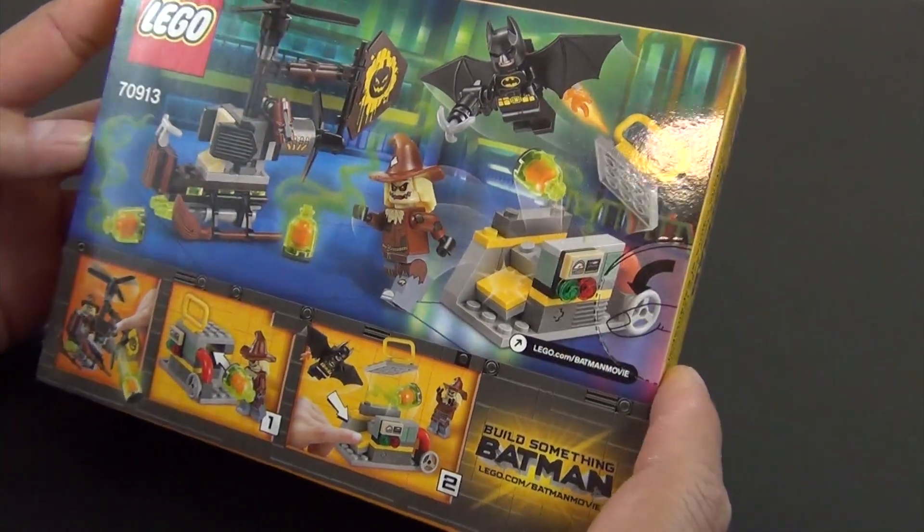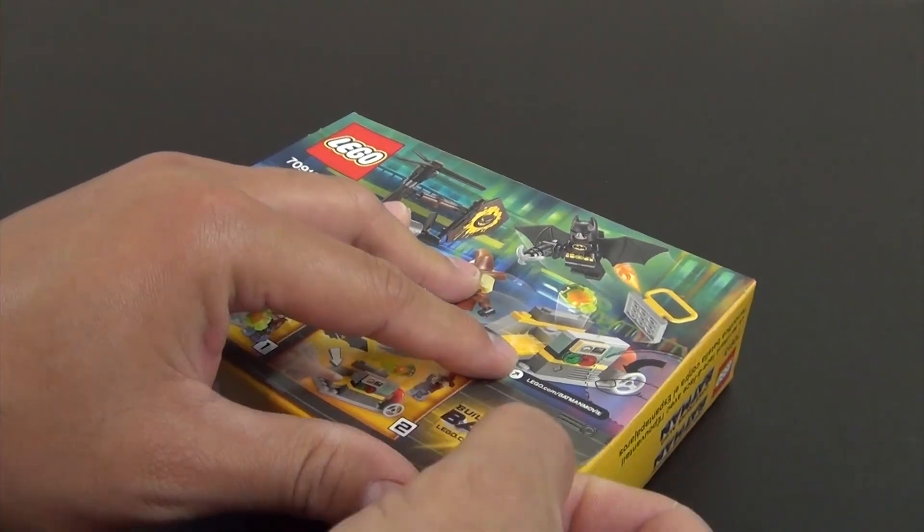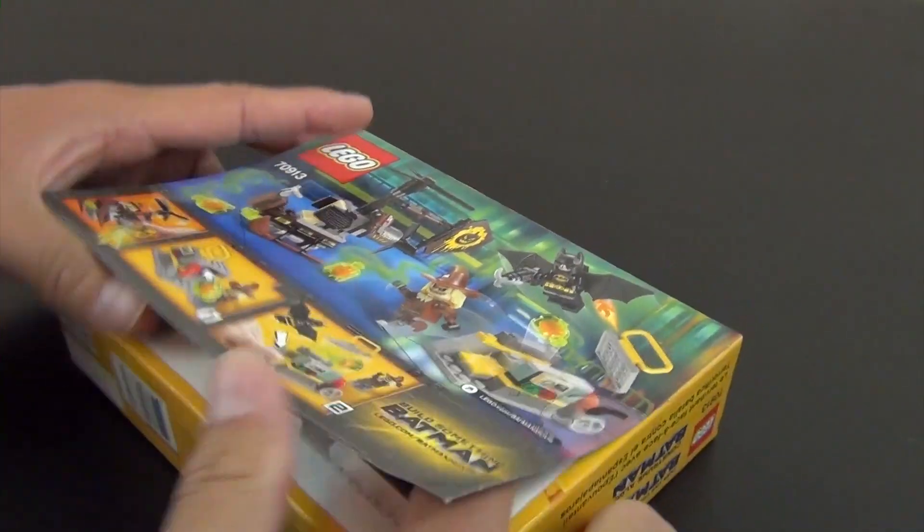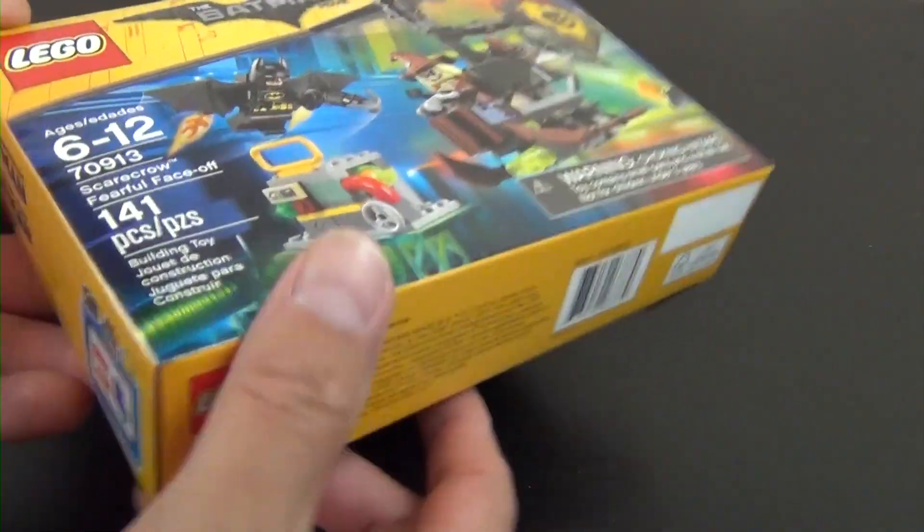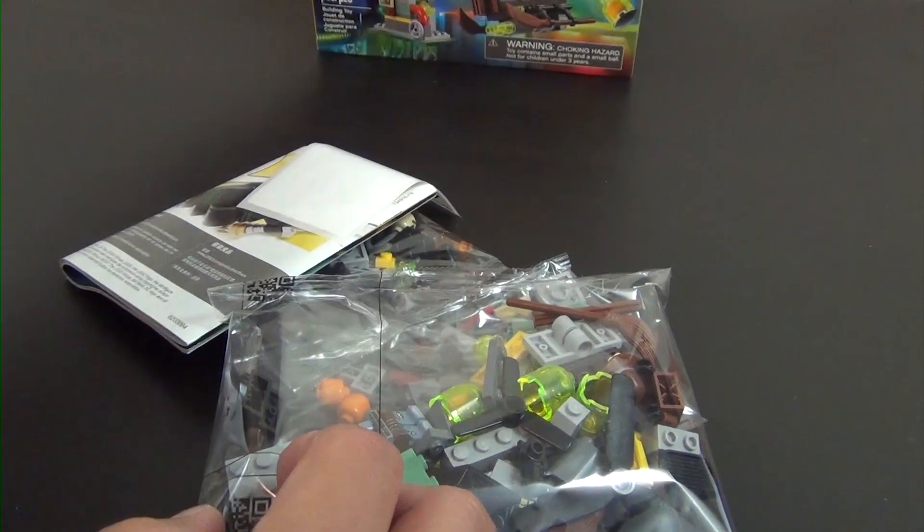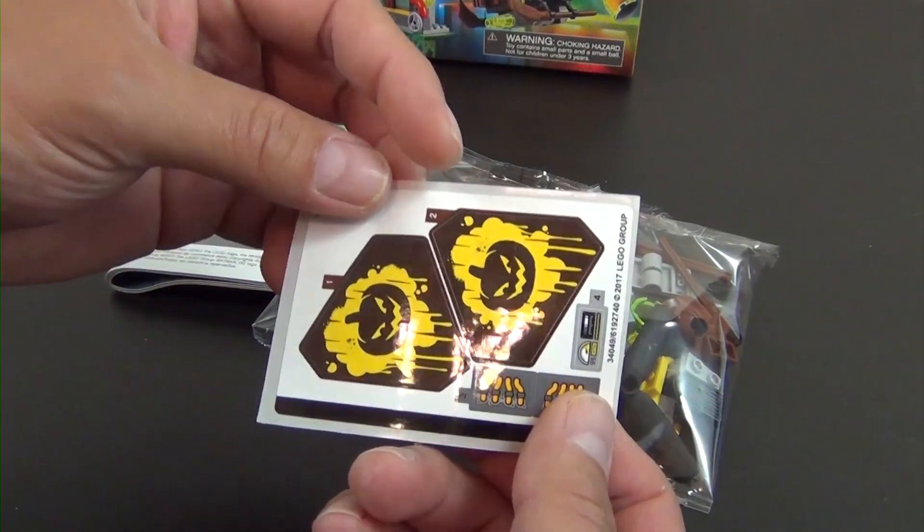Of the LEGO Batman movie sets, I think it's the smallest one of the second wave. No tape on this, just a little glue to hold the box together. Dump everything out here, we have a sticker sheet that has, looks like, five stickers on it.